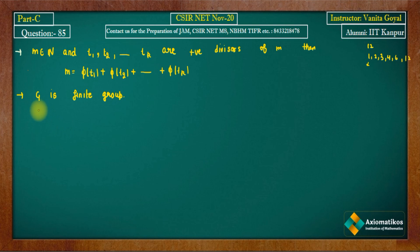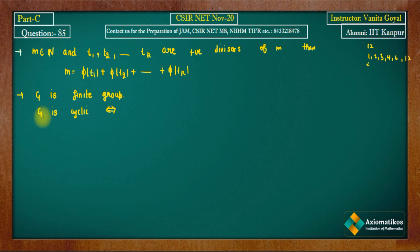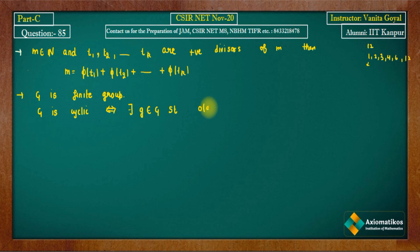We can say G is cyclic if and only if there exists an element g in G such that the order of g equals the order of the group G.